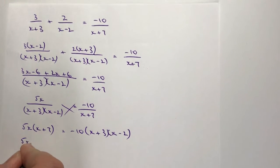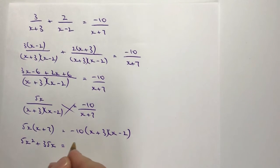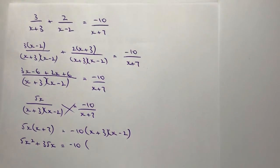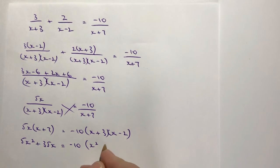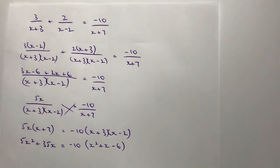So on this side, I'm going to get 5x squared plus 35x. And on this side, I'm going to leave that minus 10, but I'm going to multiply those two brackets out. And I'm going to end up with x squared minus 2x plus 3x is going to be plus x minus 6.